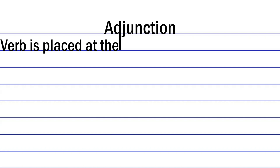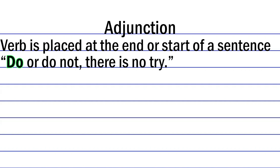For instance, 'Do or do not, there is no try' is an example of the verb coming at the start of the sentence. Without adjunction, this sentence would read: 'There is no try, do or do not.'